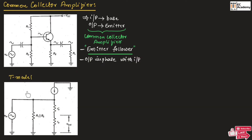This figure shows the AC equivalent circuit, which is the T model for the common collector amplifier. Here, small Re is the AC emitter resistance where we will be measuring the output voltage. As you can see, the output voltage is measured across Re. In the AC equivalent model, we can measure the output across small Re.